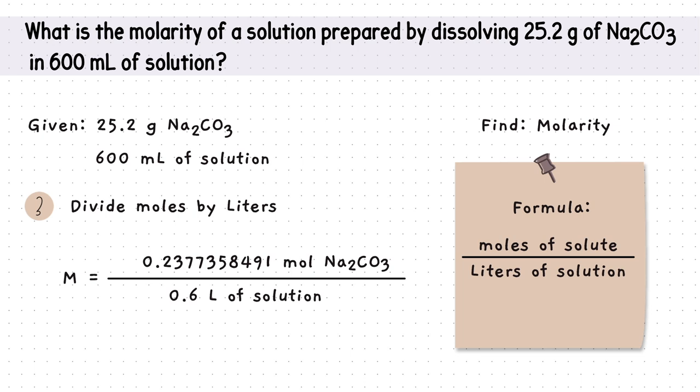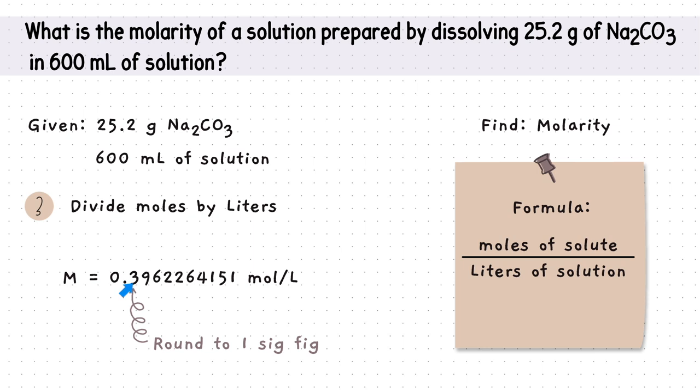Step three is putting this all together. Dividing the moles we found in step one by the liters we found in step two gives us this value. Last step is to round to the lowest number of sig figs, which is one. Our answer can be written as either 0.4 moles per liter or just 0.4 capital M. Both units refer to molarity.